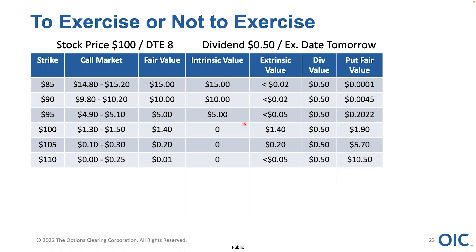If somebody exercises the 95-level call, they're giving up roughly 5 cents in time premium and benefiting 50 cents — there's an economic incentive to exercise early. They're foregoing 5 cents to gain 50 cents. Now look at the 100 calls — the at-the-money calls, comprised of nothing but time premium. The extrinsic value for the 100 calls is $1.40, which is greater than the dividend of 50 cents. By exercising the 100 calls for the dividend, they'd be foregoing $1.40 to make 50 cents — that doesn't make a lot of sense. That's not to say somebody wouldn't do it, but in all likelihood, these are not going to be exercised early.